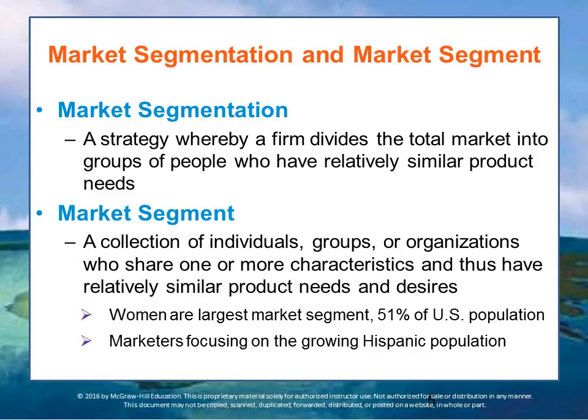Most firms, though, use something called market segmentation. They divide the total market into groups of people that have different needs and wants so you can understand the specific segment you're targeting. You might say you're targeting college students versus middle-aged professionals — different segments that would want to buy different things. A market segment is a collection of individuals, groups, or organizations who share one or more characteristics and thus have relatively similar product needs and desires.